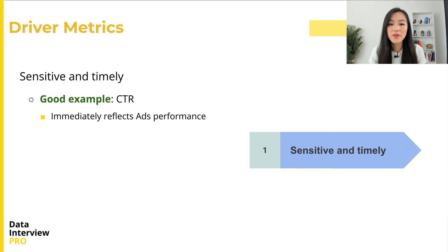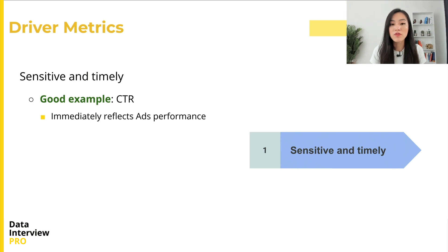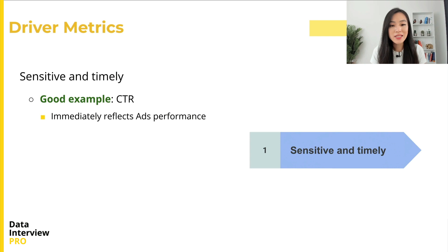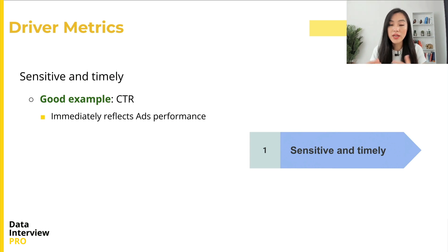There are three overall criteria we can use to evaluate driver metrics. First and most importantly, a driver metric should be sensitive and timely. A driver metric should be sensitive enough to reflect the change made in the product. The click-through rate is an ideal driver metric for this example because once we change the design of an ad, the change will be reflected in the click-through rate. We can also look at the conversion rate — the percentage of users who take the desired action, such as making a purchase — which is also an indicator that one ad is better than the other.